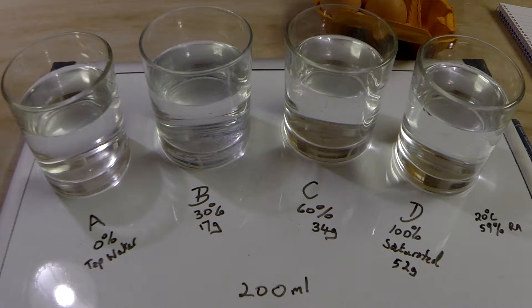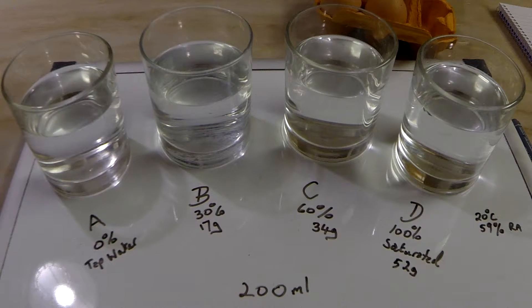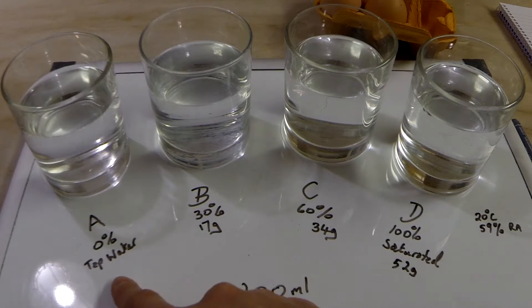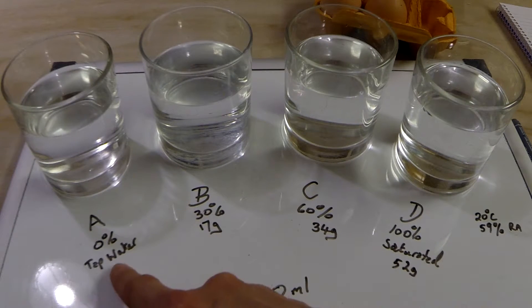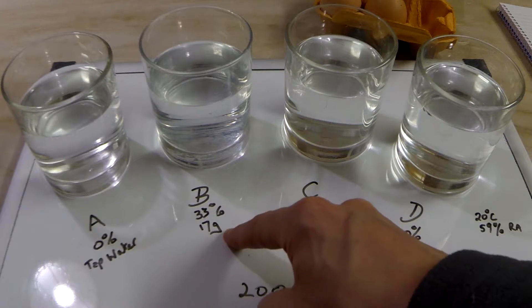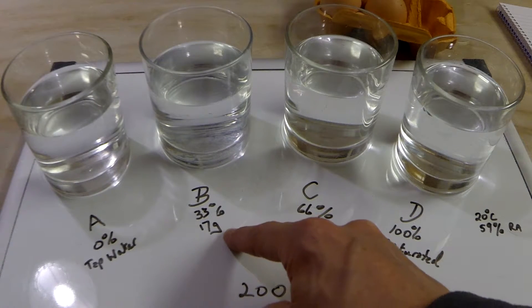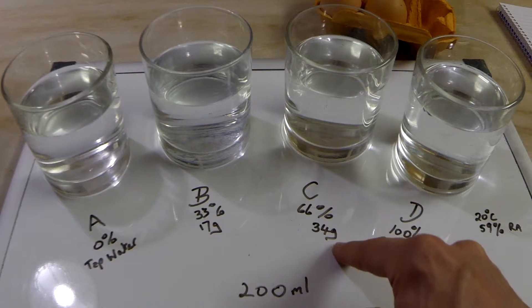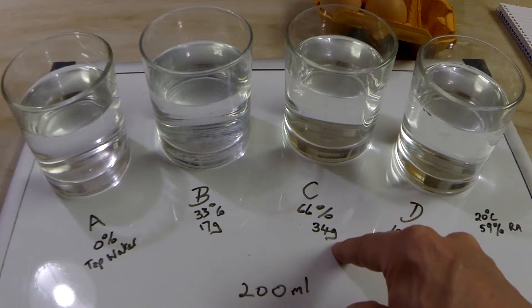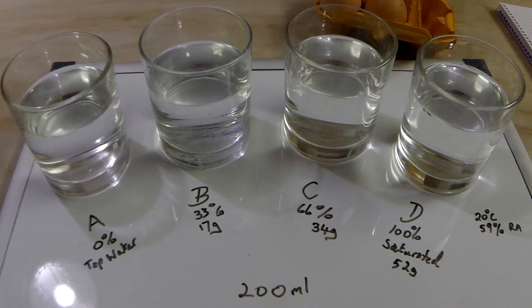So there we are. We have the four glasses with the appropriate amount of salt dissolved in them. We have glass A with 0%, that's just straight tap water. Glass B, which has 33% saturation, that's 17 grams of salt. Glass C, which is 66% saturation, which is 34 grams of salt. And as I've said, D is 100%. And just as a reminder, this is all in 200 milliliters of tap water in identical glasses.